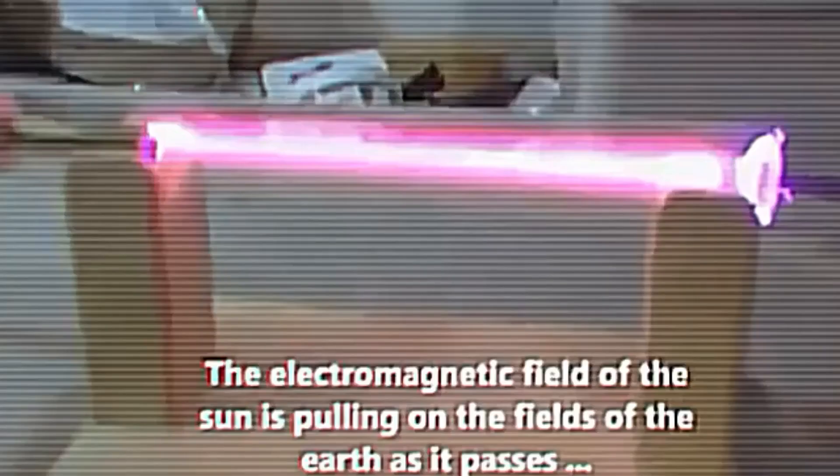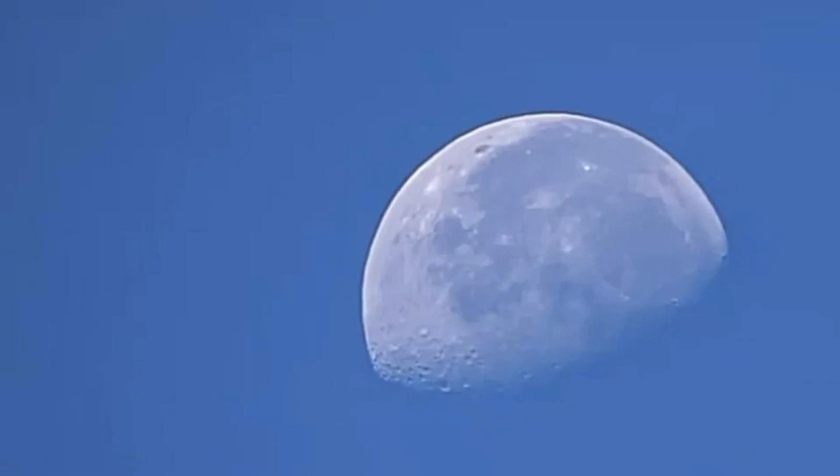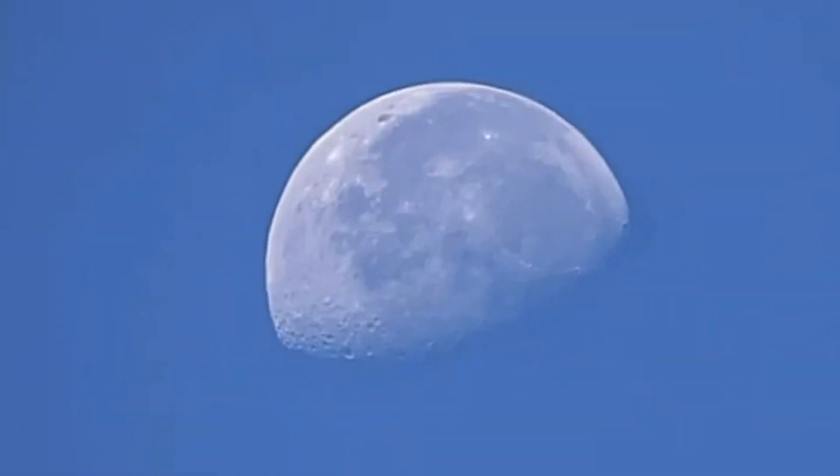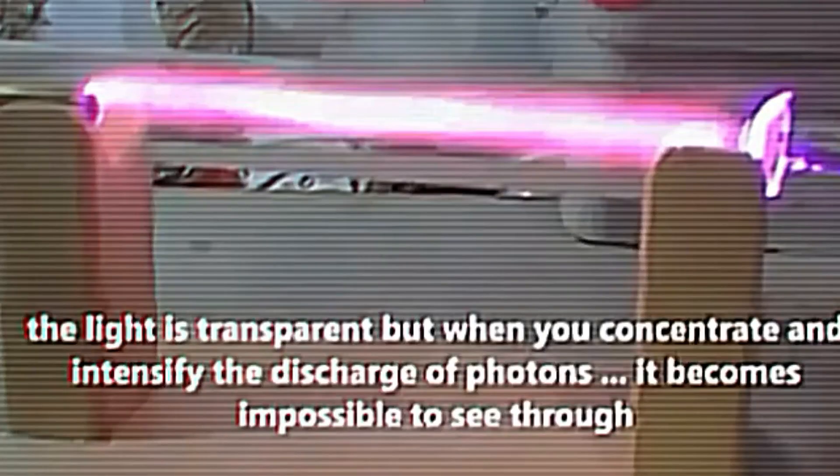Now the moon is also made up of these noble gases. As you can see right here, the moon is transparent, which explains why you can see through one side of it as you see here. Remembering what I taught you before, the electromagnetic field of the sun is pulling on the fields of the earth as it passes over the earth, just as it pulls on the magnetic field of the moon as it passes it. Just like the earth's light is transparent, but when you concentrate and intensify the discharge of photons, it becomes impossible to see through.